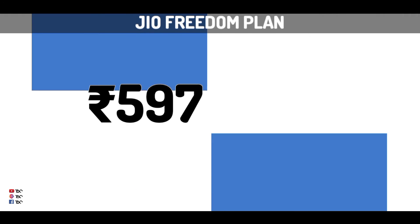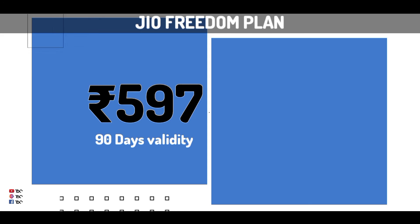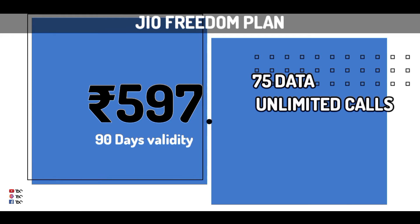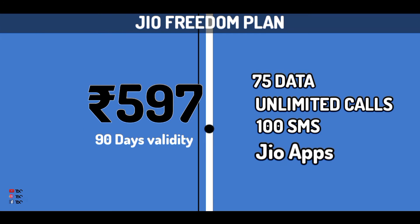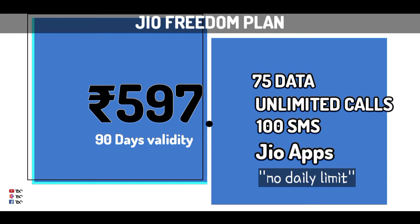6th and 4th, 6th and 5th and 4th, 9th and 4th. The 74th is the 90th and 70 GB data. 100 SMS GO apps are free to use. This is the daily limit.